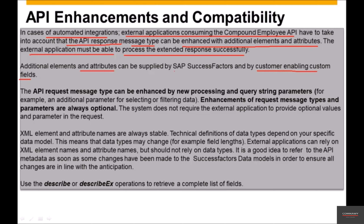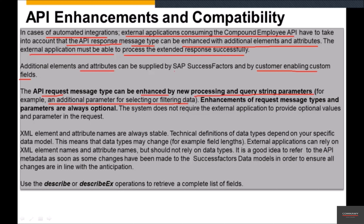The configuration can be different at various customer ends. The API request message type can also be enhanced by new processing and query string parameters — for example, an additional parameter for selecting or filtering data. If additional parameters are supplied to the Compound Employee API, there could be additional elements or segments coming into the output. With the traditional stub-and-skeleton approach, which enforces a predefined structure, new elements or sections might not fit into that stub, so we need to be aware of this limitation.